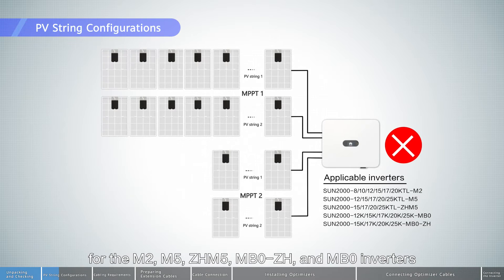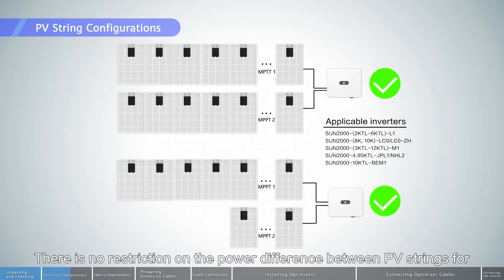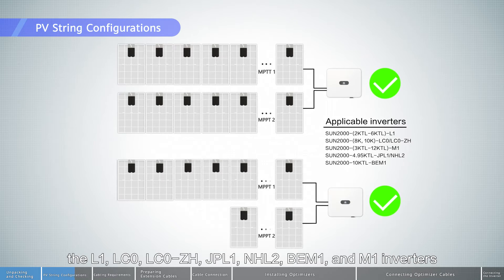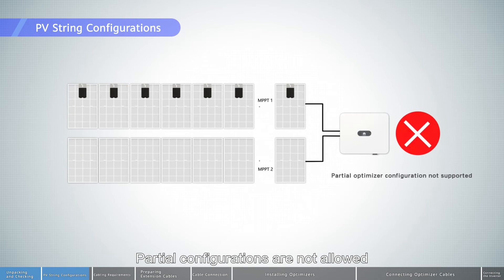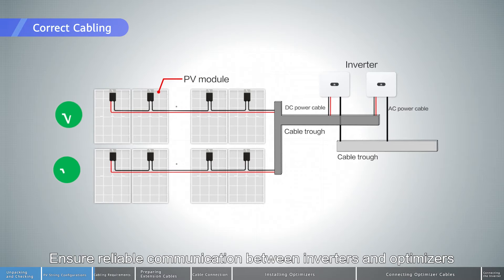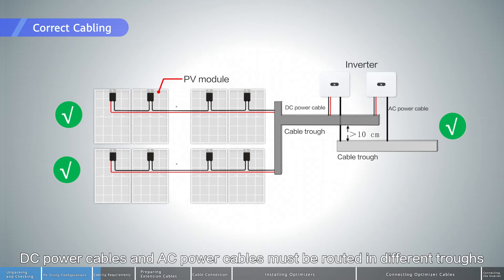The power difference between PV strings must be less than or equal to 2 kilowatts for the M2, M5 ZH, M5, MB0 ZH, and MB0 inverters. There is no restriction on the power difference between PV strings for the L1, LC0, LC0 ZH, JPL1, NHL2, BEM1, and M1 inverters. Partial configurations are not allowed. Ensure reliable communication between inverters and optimizers.